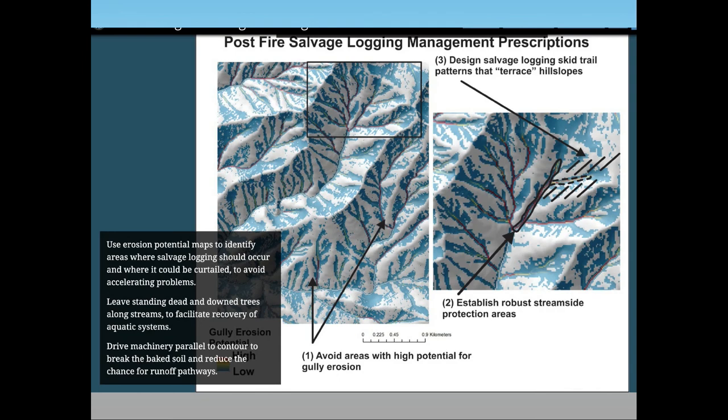With salvage logging, one thing to keep in mind is the difference between timber harvest and fire in terms of legacy. One key legacy is wood, and often we see a big influx of wood following fires — salvage logging may reduce that. We need to be careful about the effect of salvage logging in terms of that legacy, but we can look at the landscape to see places where it can be done versus places where doing it may have negative effects.